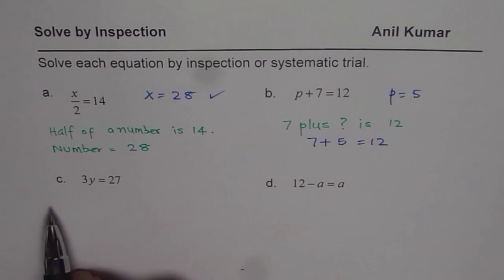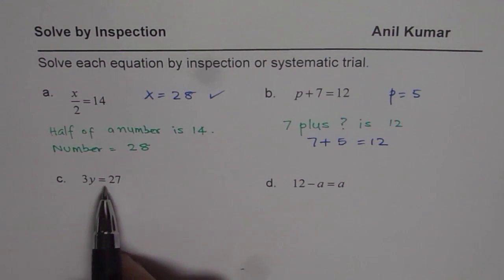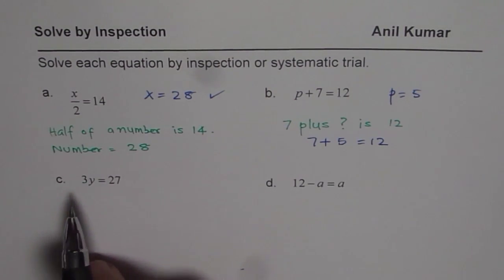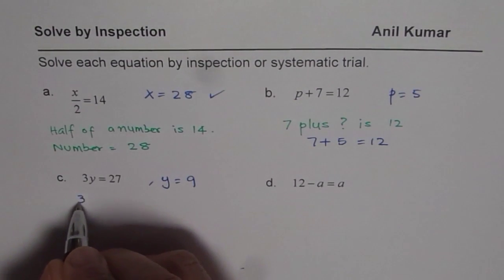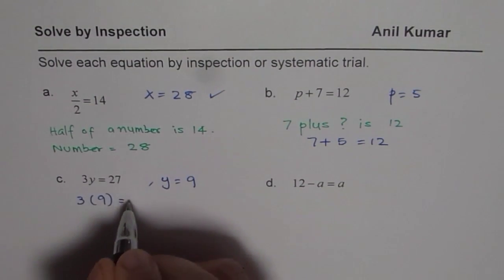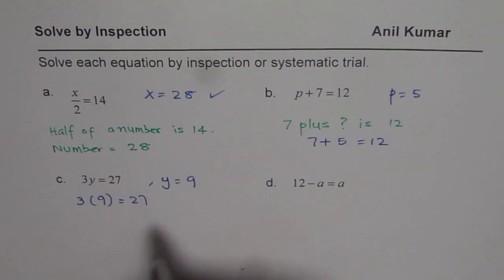Now let us look into part c, which is 3 times a number is 27. If you read like this, 3 times a number is 27, and we know 3 times 9 is 27. So y equals 9, since 3 times 9 is 27. So that is what we mean by inspection.